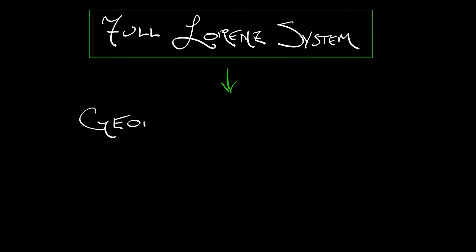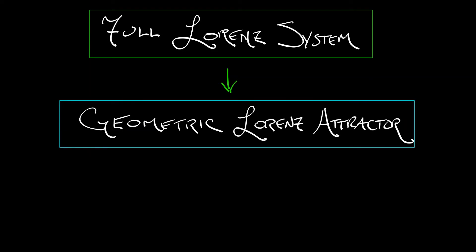But then we took that and we reduced it down to the geometric Lorenz attractor as a way of compressing out all of the difficulties of the full 3D continuous time system, moving down to a two-dimensional or kind of two-dimensional continuous time system on that branched surface.